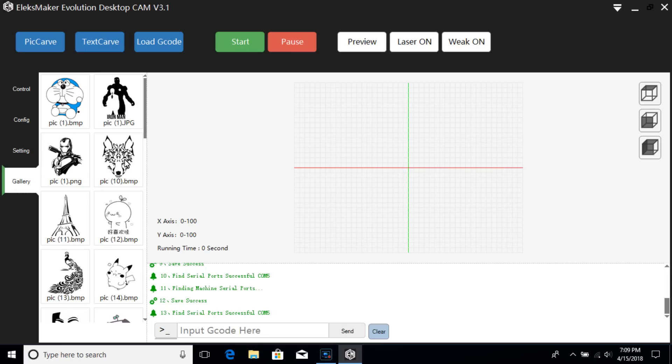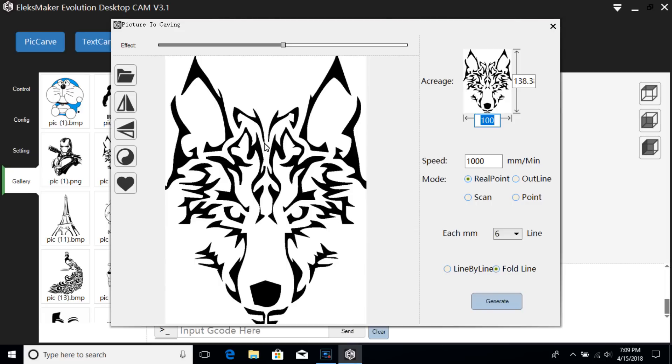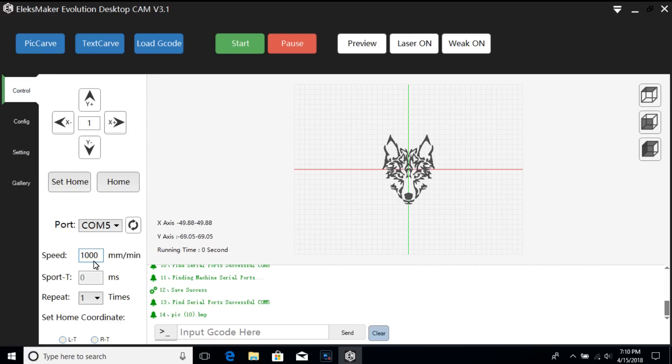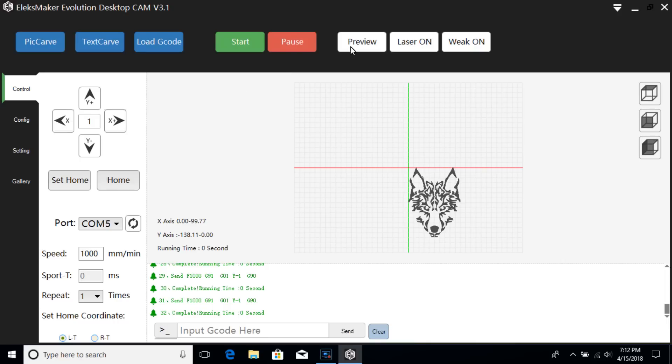Now we can try out engraving with Piccarve. There is a gallery with some pre-installed artwork. Then going back to control, we can set the home or the starting position for the laser and hit preview to see an outline of where the laser is going to cut.